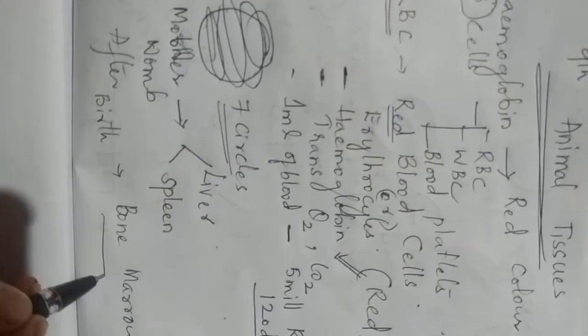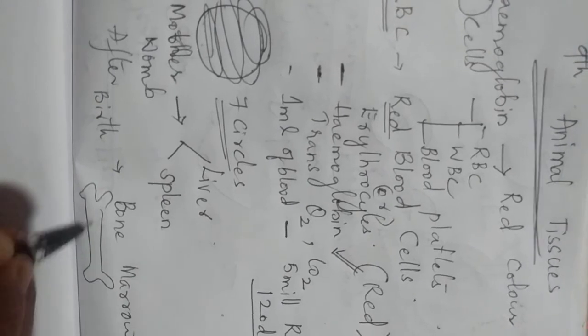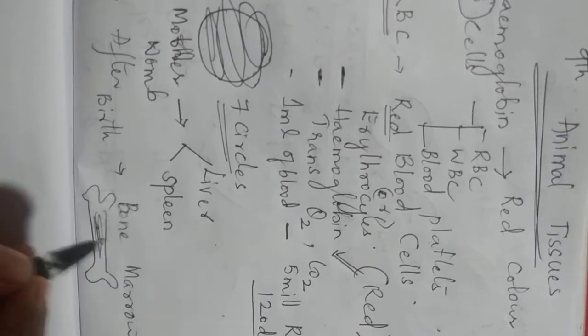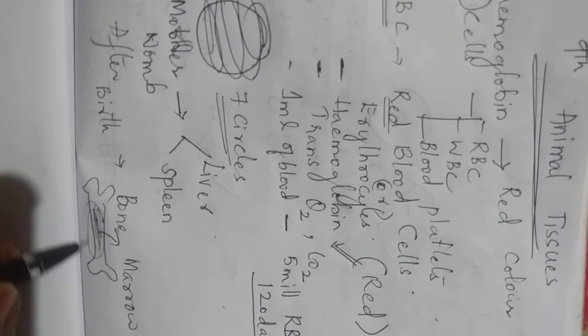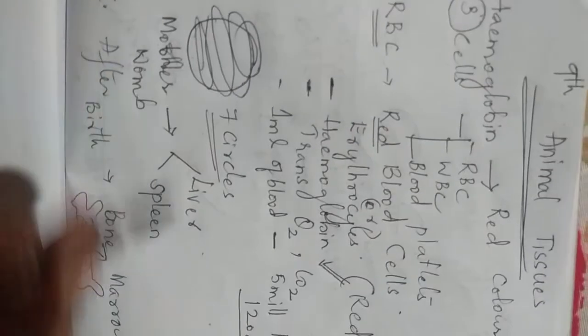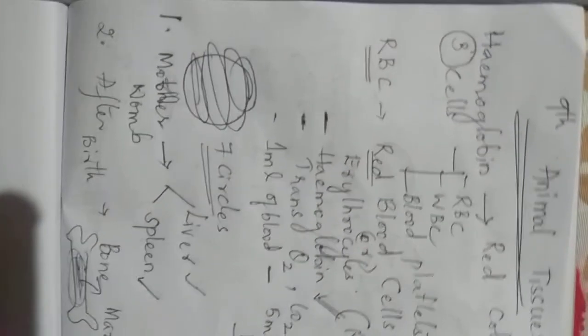For example if this is a bone. This is bone marrow inside. So RBC will be produced after birth in bone marrow. And before birth it will be produced in two organs called liver and spleen. So this is about RBC.